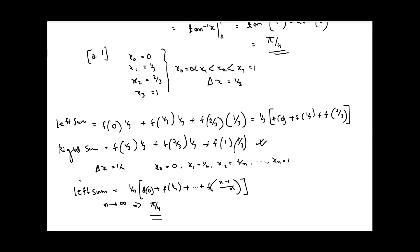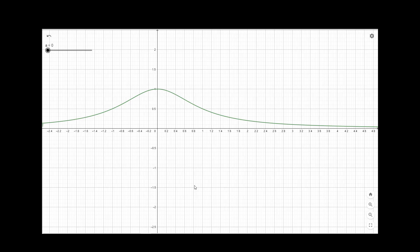Similarly for the right sum, as n tends to infinity the sum will also tend to pi/4. Now let us try to visualize this in GeoGebra. This is the graph of the function 1 divided by x squared plus 1, and we are trying to calculate the area under this curve over the x-axis in the interval 0 to 1.